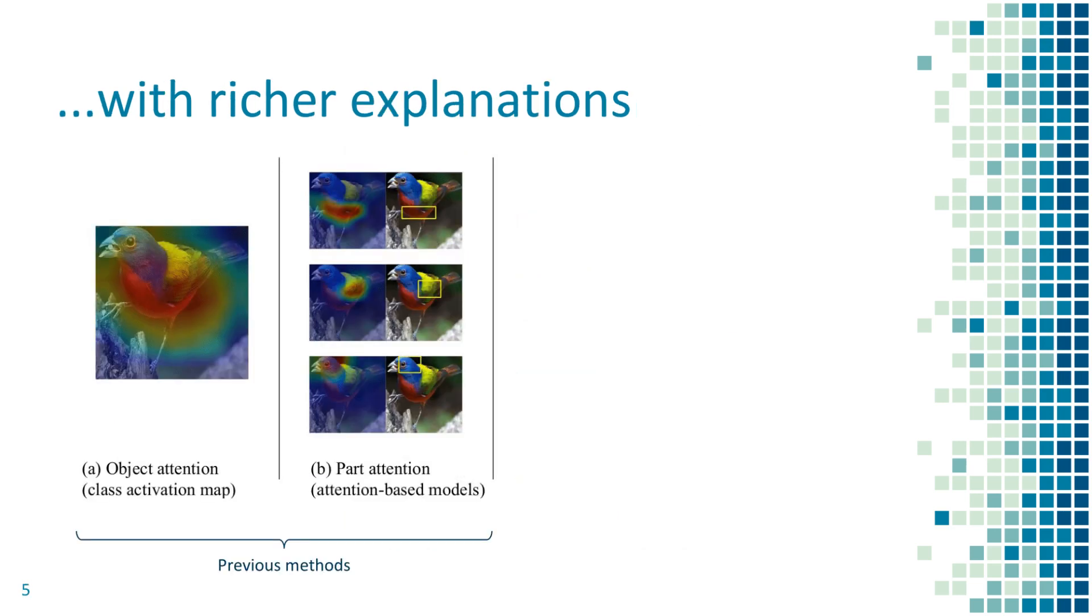Previous interpretable models often explain classification decisions using attentions. They point to either the entire object or the important parts of an object. However, it is often unclear for these models why the highlighted regions are recognized as important.